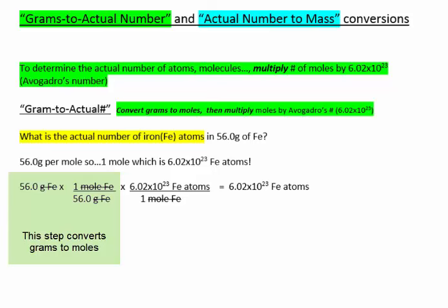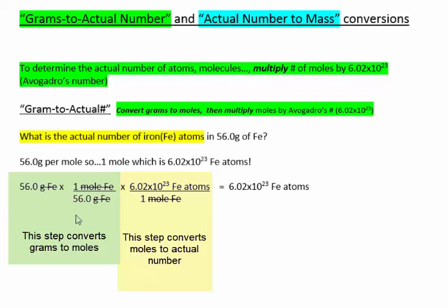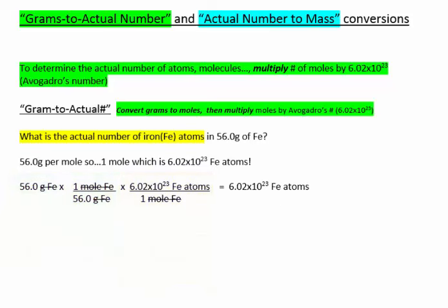Because 56 grams is the molar mass of iron, if there's 56 grams of iron, there's one mole of iron, therefore there's 6.02 times 10 to the 23rd iron atoms. The calculation is laid out here: 56 grams of iron, converting it to moles. You divide by the molar mass — so we're dividing 56 by 56, which gives us 1. Then we multiply that 1 mole by Avogadro's number to give us 6.02 times 10 to the 23rd iron atoms.